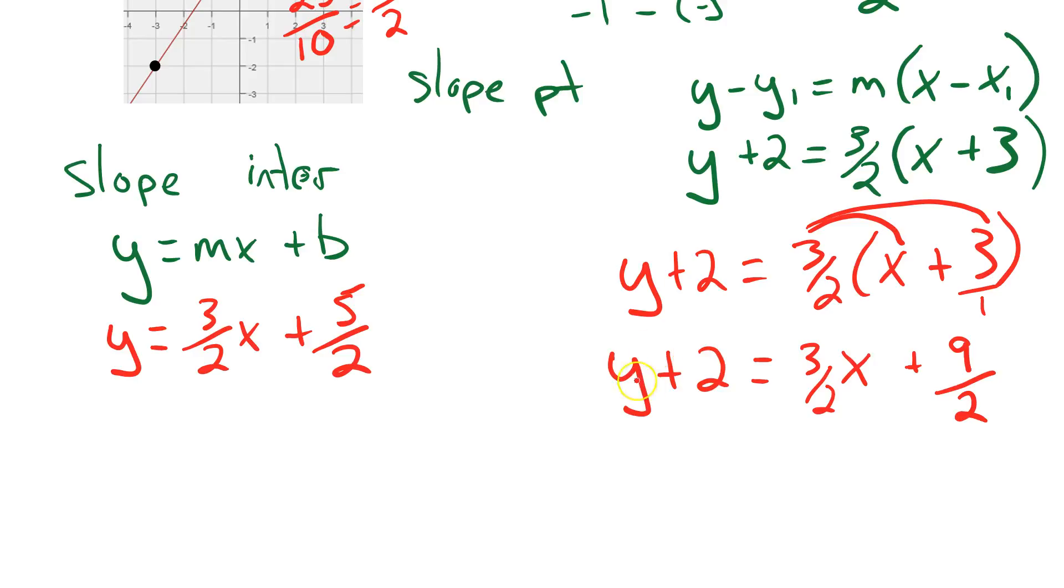So now all I have to do is bring my positive 2 to the other side. So I'm going to subtract 2. But I know when I'm subtracting fractions, I have to have the same denominator. So 2 is the same as 4 over 2. So I'm going to subtract 4 over 2. So this leaves me with y equals 3 over 2x. 9 over 2 minus 4 over 2. I'm subtracting fractions. My denominators are the same, so that's good. And then I'll simply subtract the numerator, which gives me positive 5 over 2. So y equals 3 over 2x plus 5 over 2.